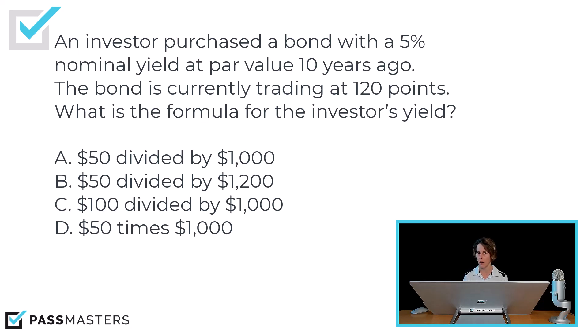If it wasn't purchased at par, that would not have been true. Is the bond in the secondary market trading at a premium or at a discount? It's trading at a premium, which means interest rates in the economy must have gone down. There's an inverse relationship between interest rates and current market price. If the current market price is higher than par, then interest rates have gone down relative to this bond's 5% nominal yield.